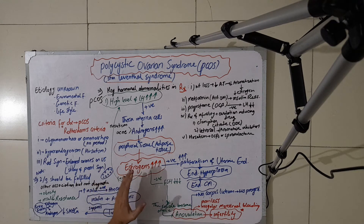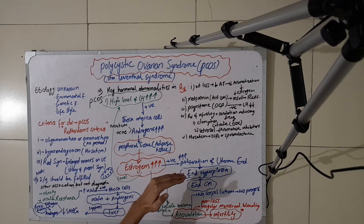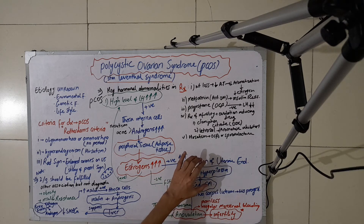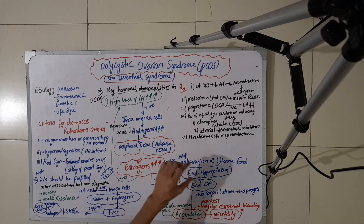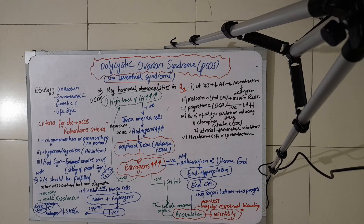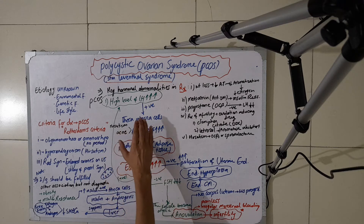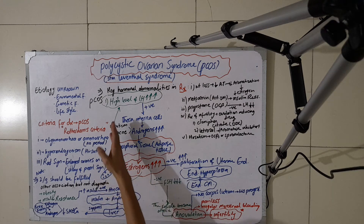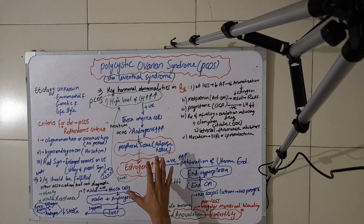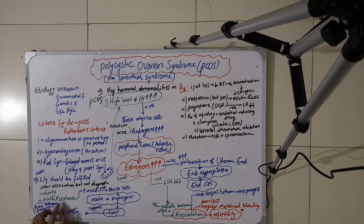Another manifestation of high estrogen levels is positive stimulation of proliferation of the uterine endometrium. This causes excess proliferation of the endometrial layer, leading to endometrial hyperplasia, which may finally develop into endometrial carcinoma. High levels of estrogen also give positive feedback stimulation to LH production from the pituitary, causing an increase in LH levels, and this cycle continues.